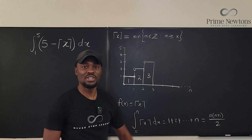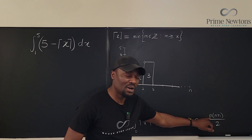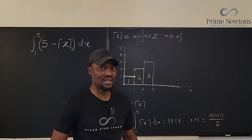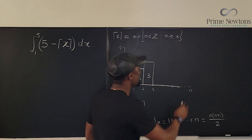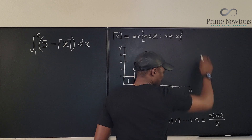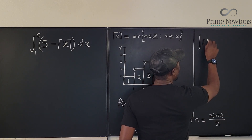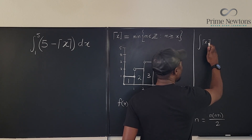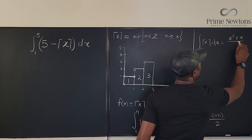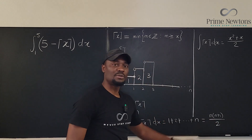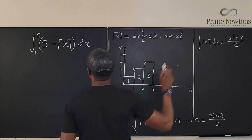Nothing changes here — remember, in the previous video for the floor function I replaced N with X minus 1. Here, N is just X, whatever it is. You're not losing anything. So we can say the integral of the ceiling of x dx equals X squared plus X over 2. I just replaced N with X. No rectangles are lost.